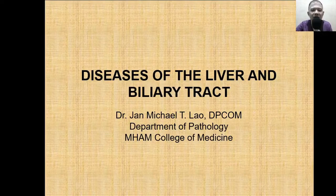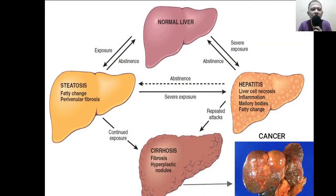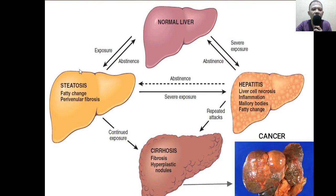Hi there, I'm Dr. John Michael Lau and this time I'll be doing a laboratory demo on the diseases of the liver and the biliary tract. Before we start looking at the slides, I'll be orienting you about the continuum of liver injury. What is shown is basically the usual pattern of injury when a liver gets injured. When a liver becomes exposed to a mild injury, it undergoes fatty change — that's the mildest form of injury manifested by the liver.